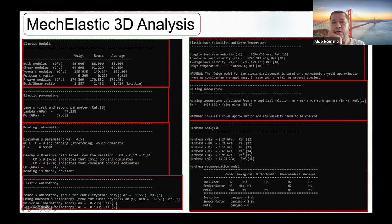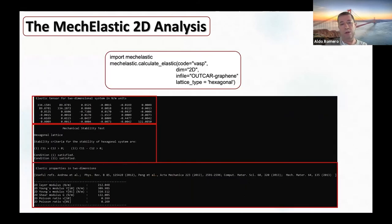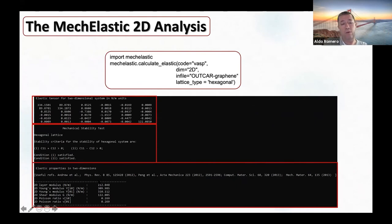We also obtain elastic wave velocities and the Debye temperature estimated from the elastic constants. For two-dimensional crystals, we do exactly the same: we compute the elastic tensor, calculate the eigenvalues, perform mechanical stability analysis, and calculate elastic properties such as the modulus and two-dimensional layer modulus.